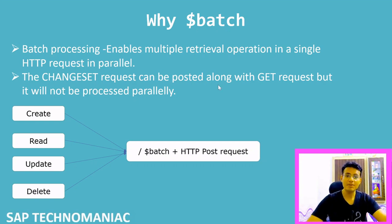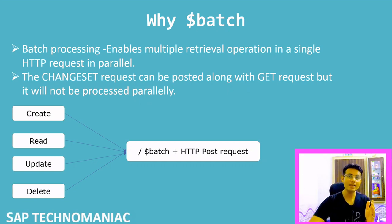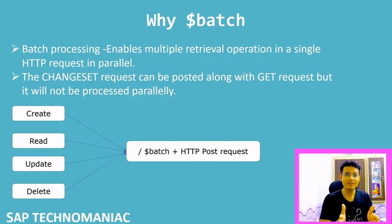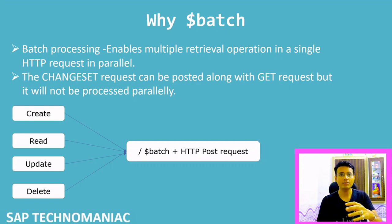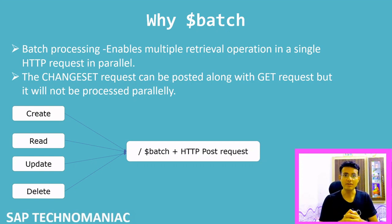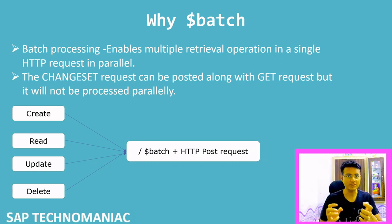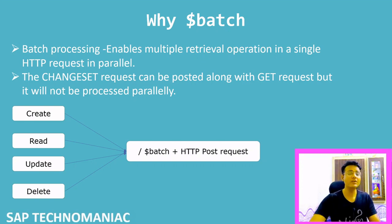Change set requests can be posted along with GET requests, but they will not be processed in parallel. One important thing about parallelization: when we read data from the backend system through front-end applications, we can do parallel read operations, but we cannot do parallel change operations. We'll discuss parallel operations in detail.